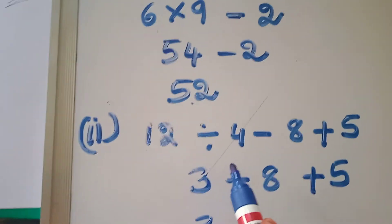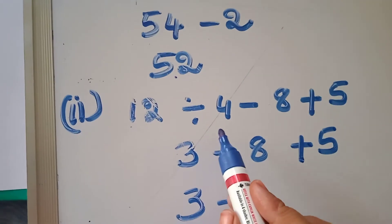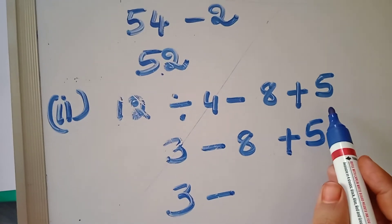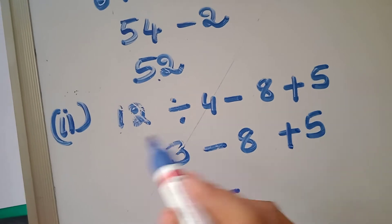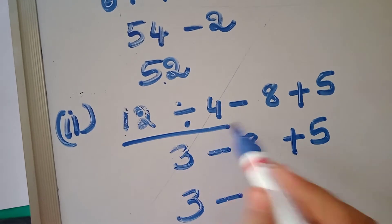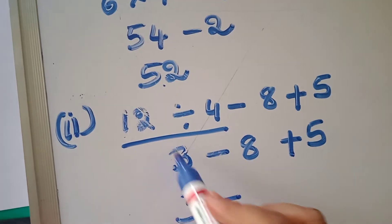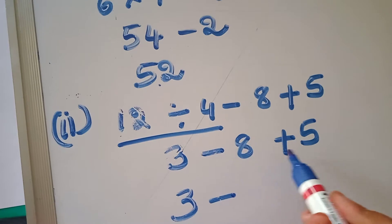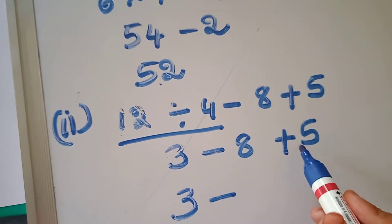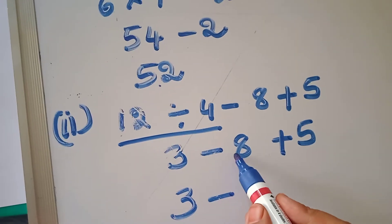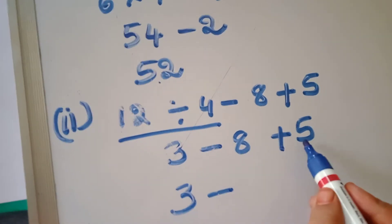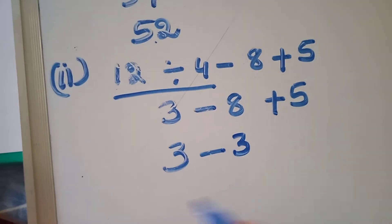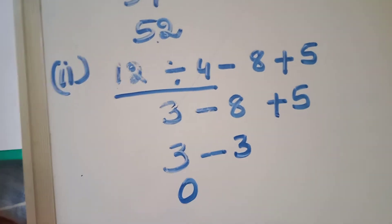Next, 12 is divided by 4 minus 8 plus 5. First, solve the division: 12 divided by 4 is 3. So 3 minus 8 plus 5. That gives 3 minus 3, which equals 0.